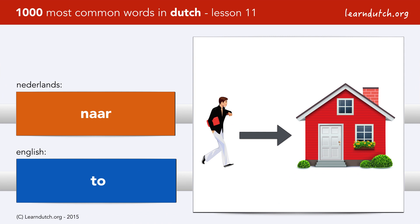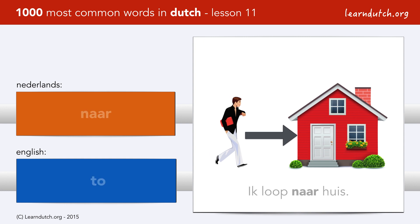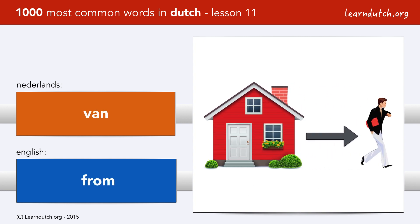Naar. Using the verb lopen, you now can say: ik loop naar huis. Van. When we leave home, we say: ik ga van huis.